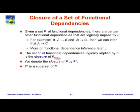In general, the set of all functional dependencies logically implied by F is called the closure of F. The closure includes all the trivial ones, because they are always implied. Even if we did not give any initial set of dependencies, the trivial ones are always inferable. And therefore, they are logically implied by any set of dependencies. They also include the non-trivial ones which we can actually infer. So conceptually, whatever we can infer logically is part of the closure.